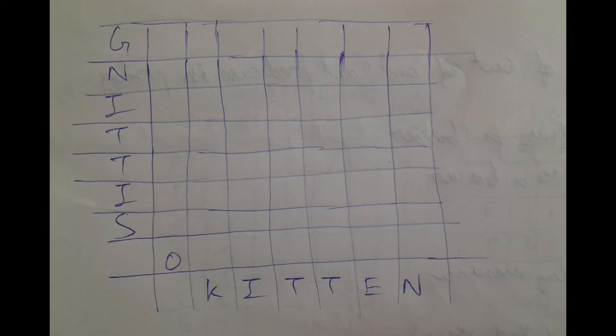We number 1, 2, 3, 4, 5, 6 for kitten and 1, 2, 3, 4, 5, 6, 7 for sitting.